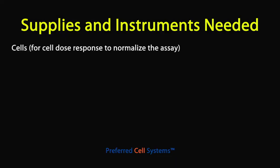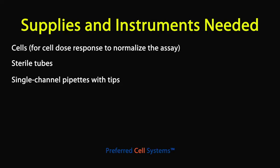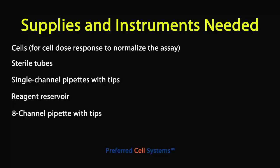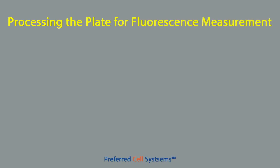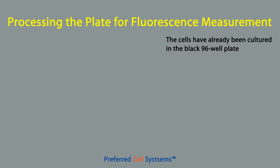You'll also need the following supplies and instruments: cells, and if you're going to normalize the assay, sterile tubes to dilute the cells for the cell dose response. For this tutorial, it is assumed that the cells have been cultured for a specific period of time in the black sterile 96-well plate provided with the assay kit, as only the procedure for processing the plate and measuring fluorescence is described.